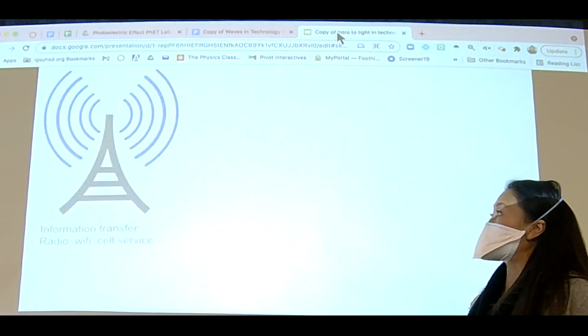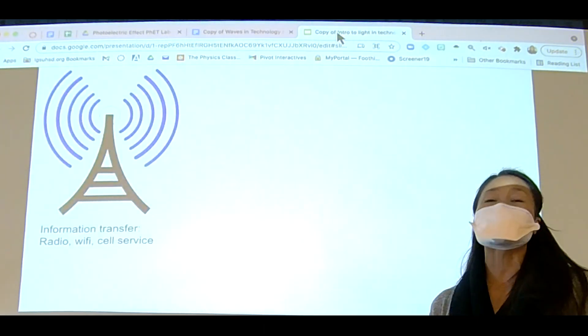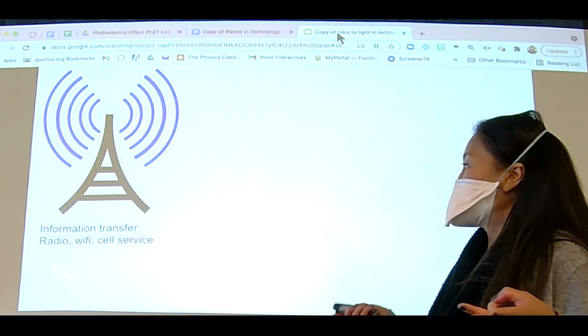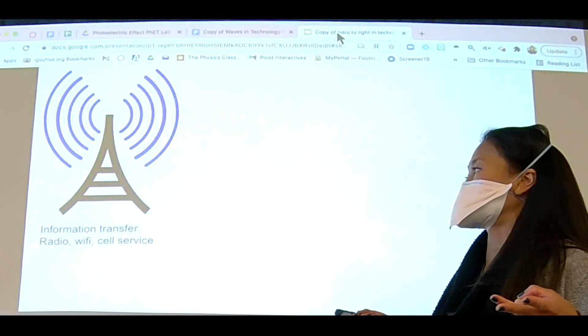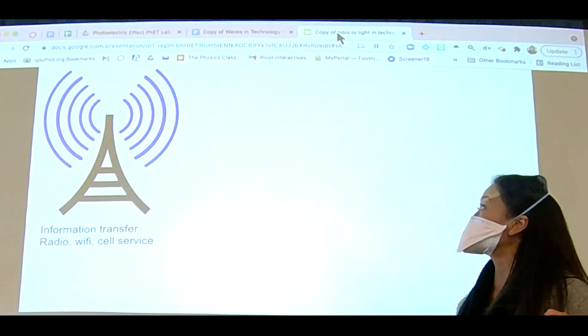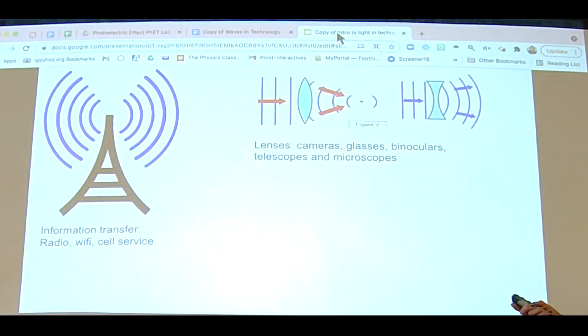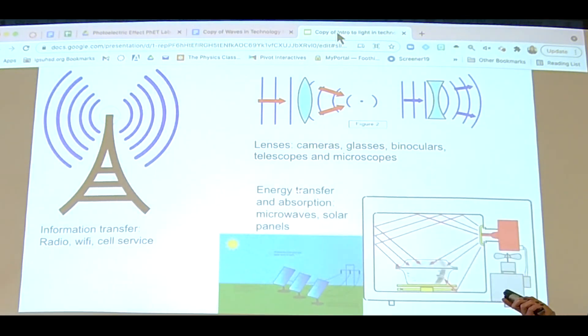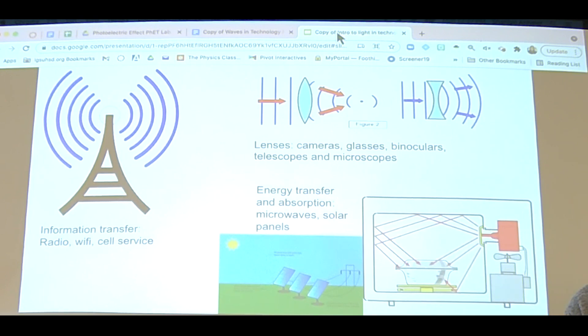There are three different ways light technology is used. One is to transfer information such as radio, Wi-Fi, and cell service. The other is light waves used in lenses, for example cameras, glasses, binoculars, telescopes, and microscopes. And then the last one is transferring energy such as microwaves, solar panels, and x-rays. Those are all using light waves and energy transfer.